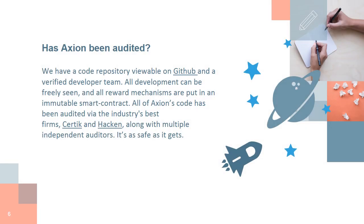Has Axion been audited? We have a code repository viewable on GitHub and a verified developer team. All development can be freely seen, and all reward mechanisms are put in an immutable smart contract. All of Axion's code has been audited via the industry's best firms, Certique and Hacken, along with multiple independent auditors. It's as safe as it gets.